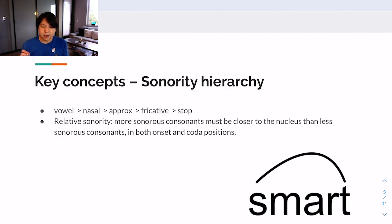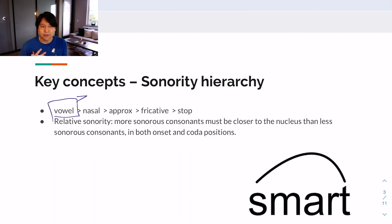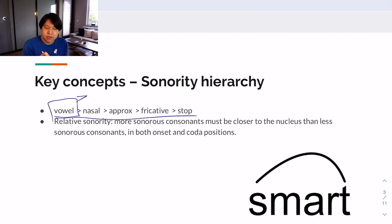We also learned about the sonority hierarchy. Sonority is about how much airflow comes out through your oral or nasal cavity when you're pronouncing a specific sound. Vowels always have higher sonority than any consonant, because when you pronounce vowels like 'ah' or 'oh,' there is no obstacle within your oral or nasal cavity — 100% of air comes out from the lungs easily. In contrast, stops like 'pa,' 'ta,' 'ka' always have obstacles that block the airflow. The hierarchy starts from vowel, and goes through nasal, approximant, fricative, and stop.